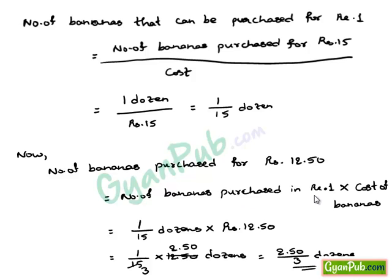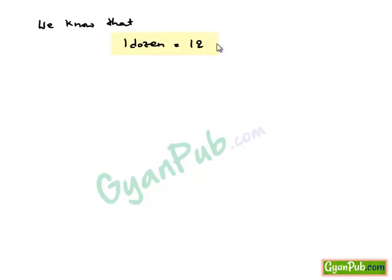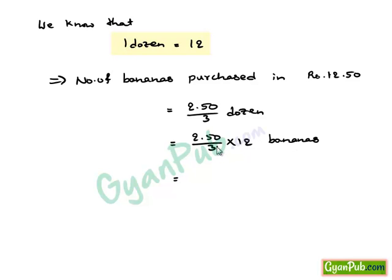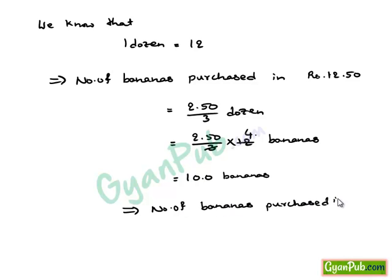We know that 1 dozen equals 12. Number of bananas purchased for Rs. 12.50 is 2.50 upon 3 multiplied by 12 bananas. 3 goes into 12 by 4 times and 2.50 multiplied by 4 gives 10. Therefore, number of bananas purchased for Rs. 12.50 is equal to 10 bananas.